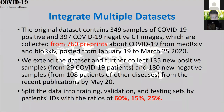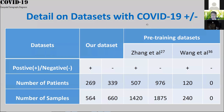Our work integrates multiple datasets. One publicly available dataset has 349 positive cases and 397 negative cases, with images from preprints from January to March. We kept expanding this dataset by collecting more cases. We split the data into training, validation, and testing sets based on 60%, 15%, and 25% proportions.